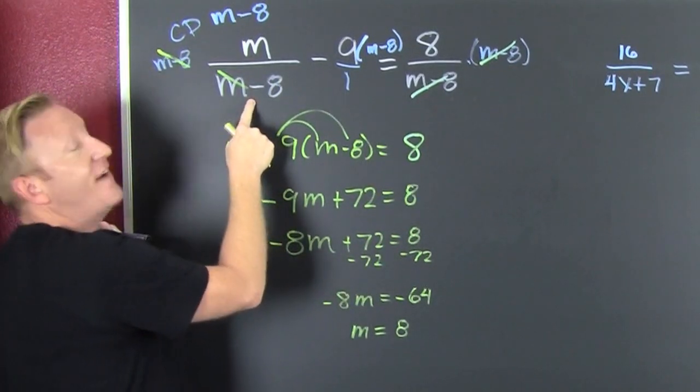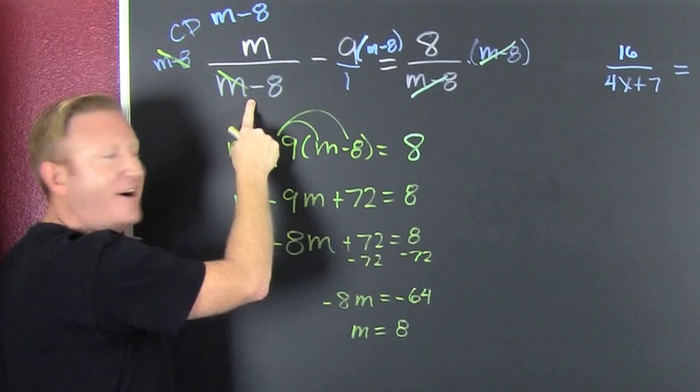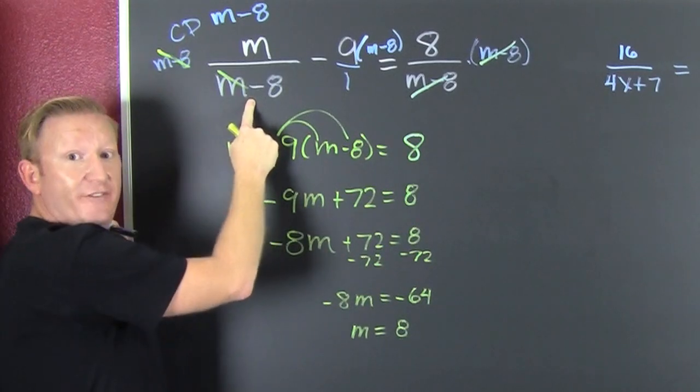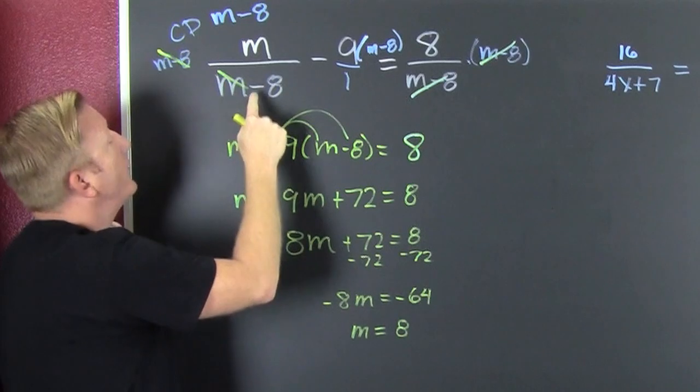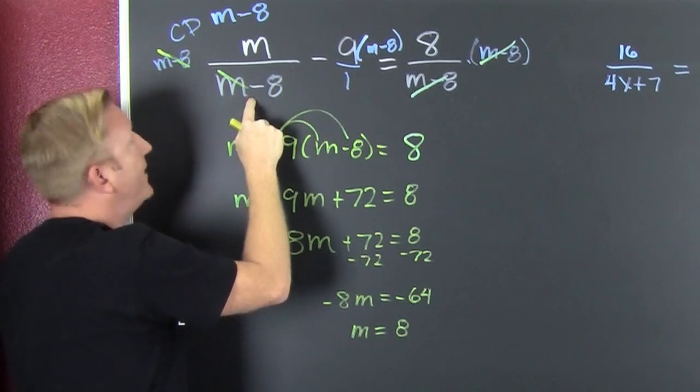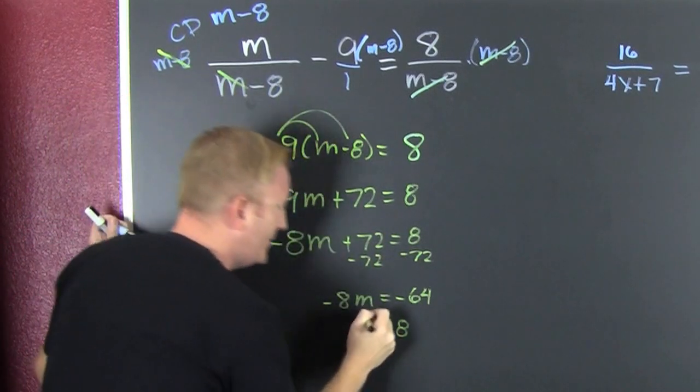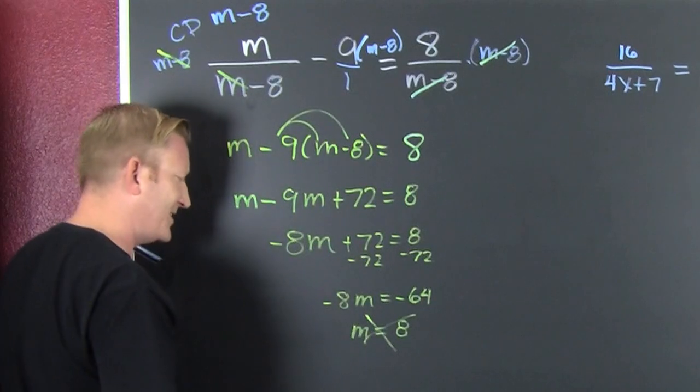Look at that. Violates the domain. Violated. Because you can never divide by 0. You can never divide by 0. When you put an 8 back up in there, it divides by 0. So you are not a solution.